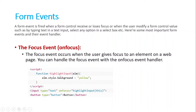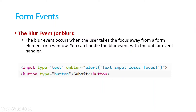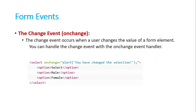Then we have the blur event. The onblur event occurs when the user takes focus away from a form element or window — for example, if you clicked on an input and then click outside. You can handle the blur event with the onblur event handler. Similarly, we can use the alert method here, or a custom function if we want.